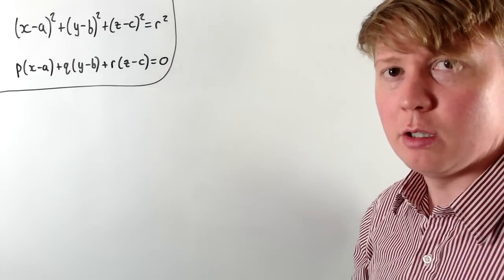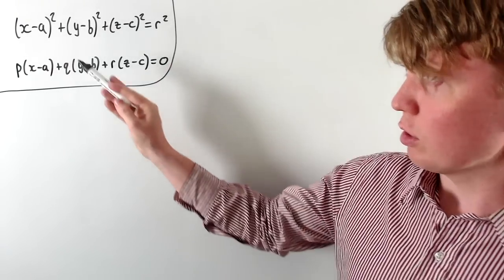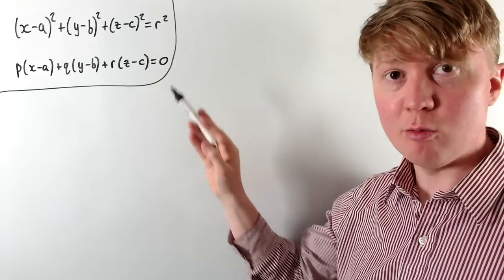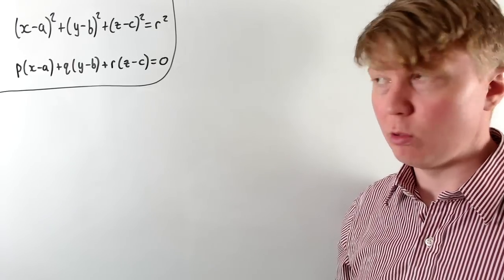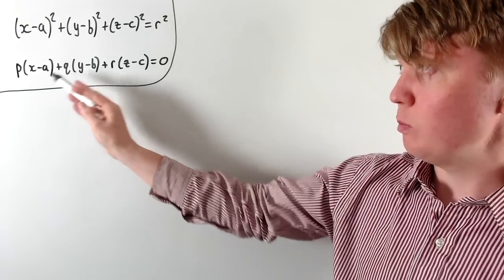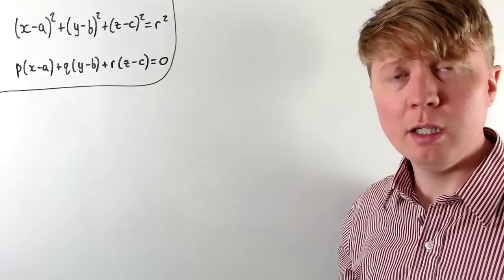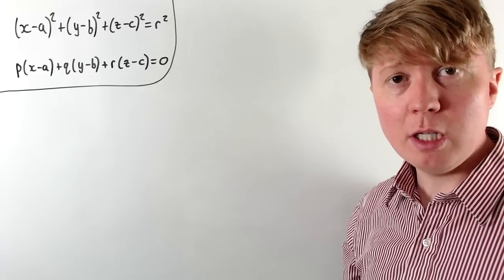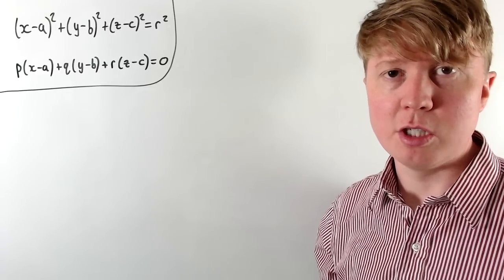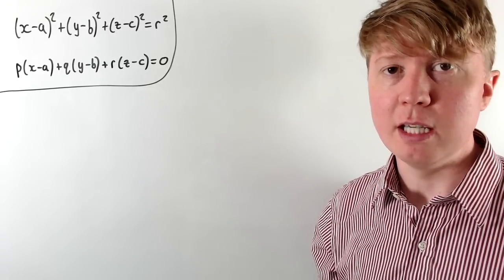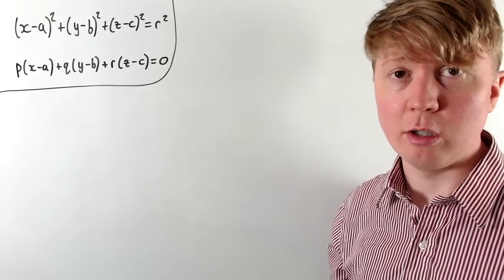These two equations — the sphere and the plane — define every circle in 3D: all circles with centre (a, b, c), radius r, contained in a plane normal to (p, q, r) which also contains the centre (a, b, c). But it would also be nice if we could have a single equation for a circle in 3D, rather than two equations which happen to define a circle.